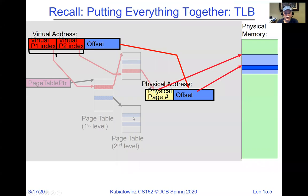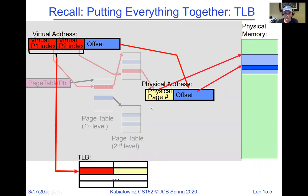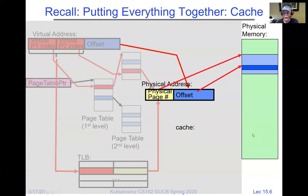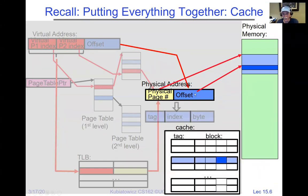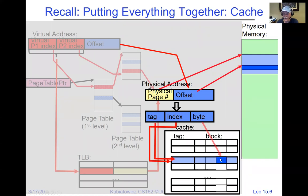To pull it all together: we walk the page table, and potentially the TLB has this cached. We take the 20-bit virtual page, look it up in the TLB, and that gives us the physical page — a much faster on-chip path. Then we treat the physical address as tag plus index plus byte offset. The index looks up in the cache, the tag gets compared, and if it matches, the byte is fetched from the regular cache rather than going to DRAM.